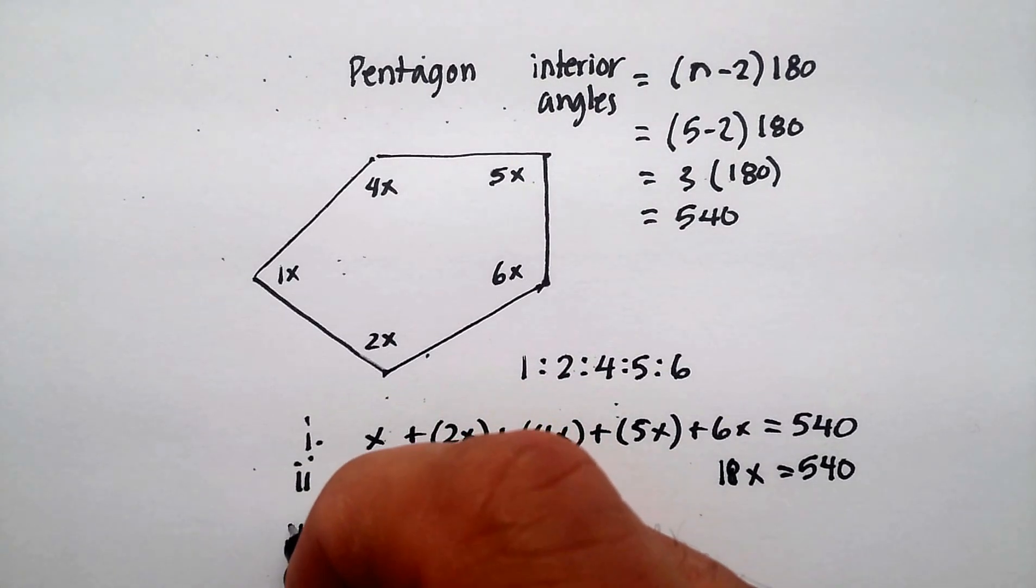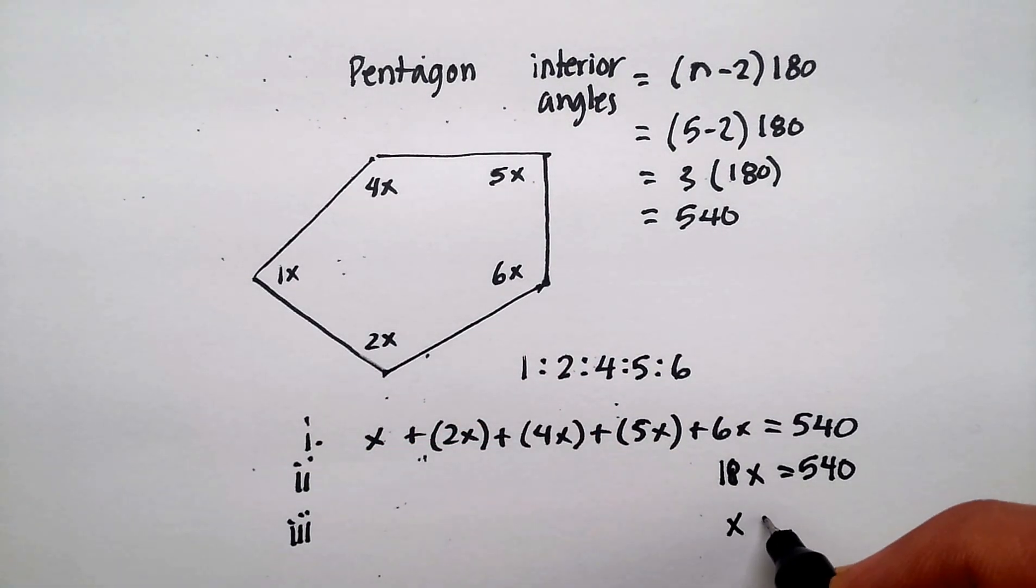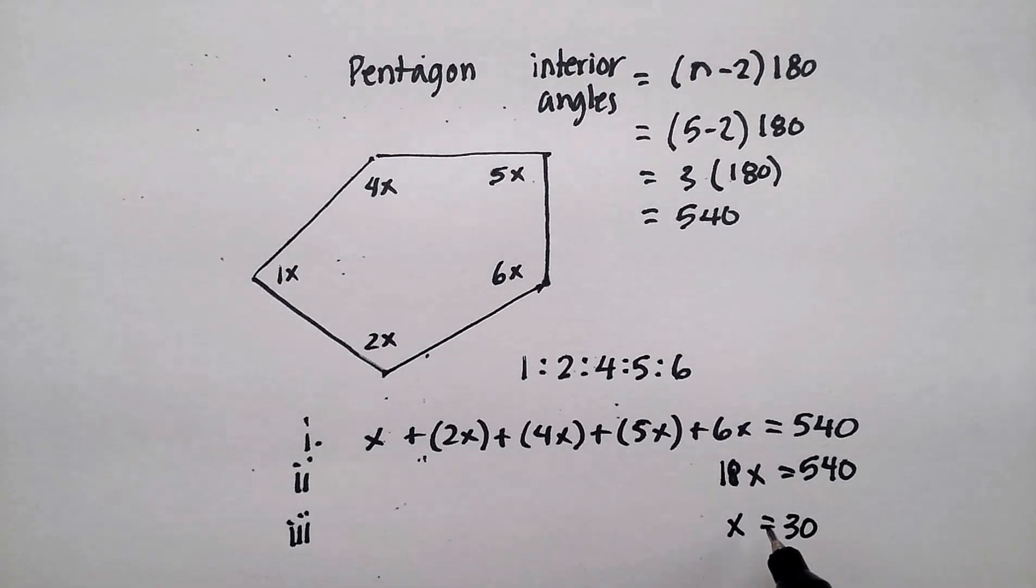540 divided by 18, quick calculation here to the side, 30. x is equal to 30 degrees.